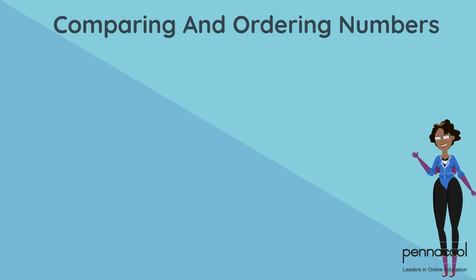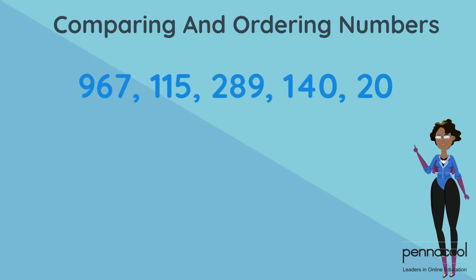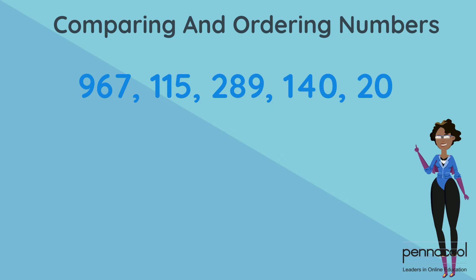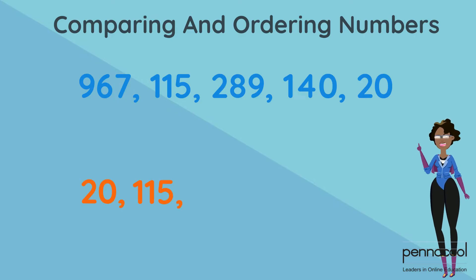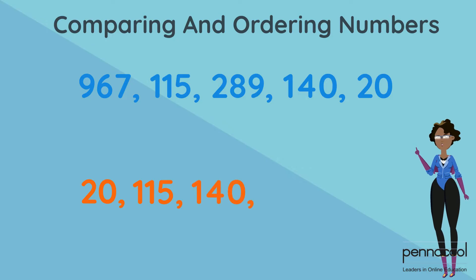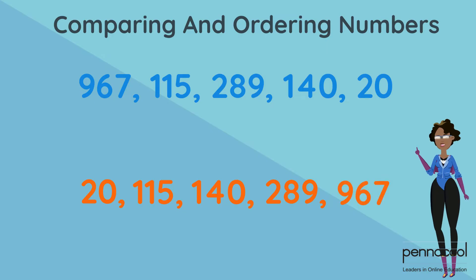Let's look at the numbers below: 967, 115, 289, 140 and 20. Let's see if we can put them in ascending order. That means we have to start from our smallest number, which is 20. Next in line would be 115, then 140, then 289, and then finally 967. We did it!